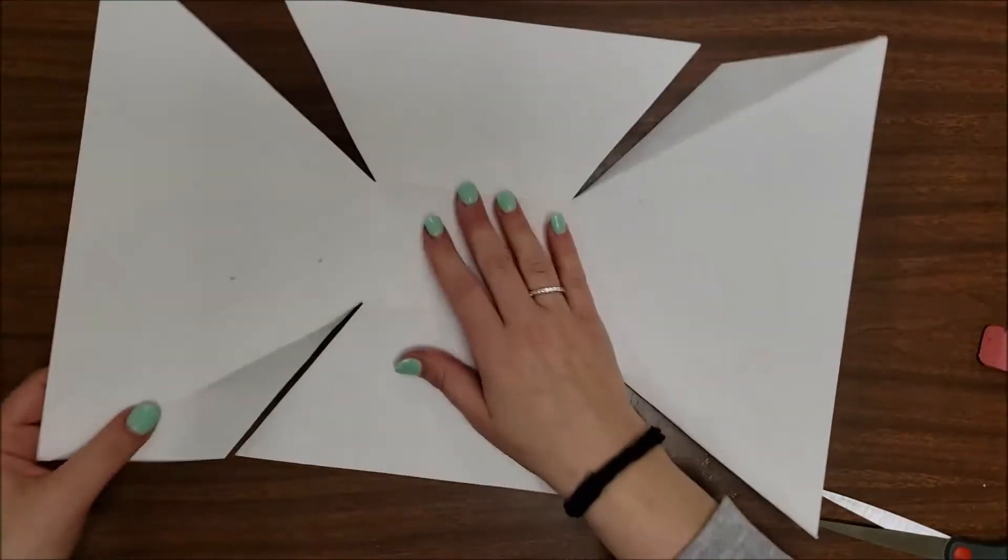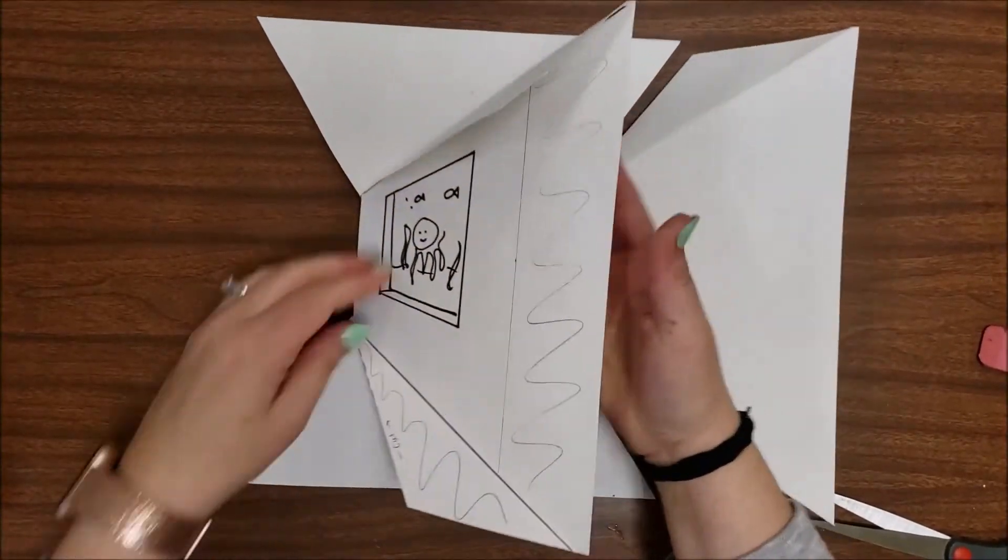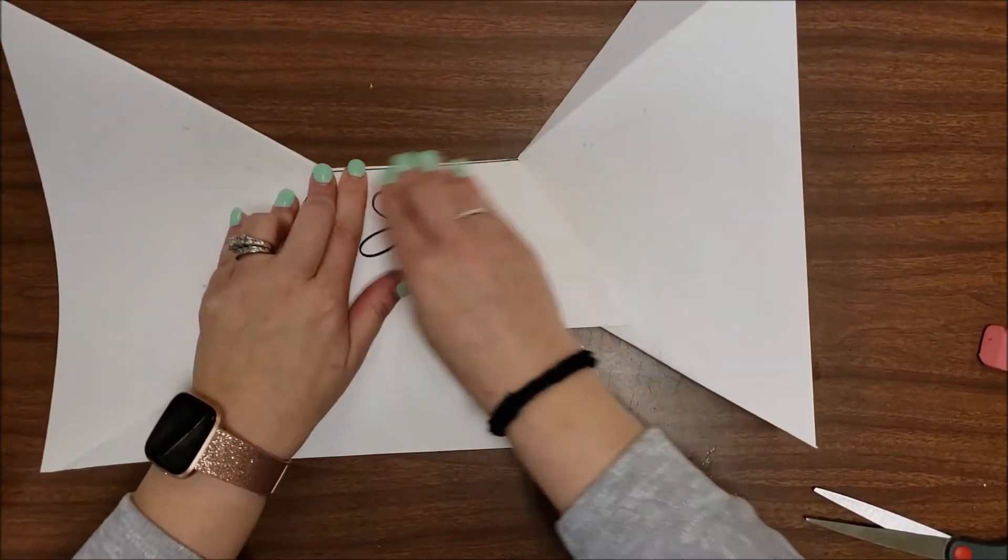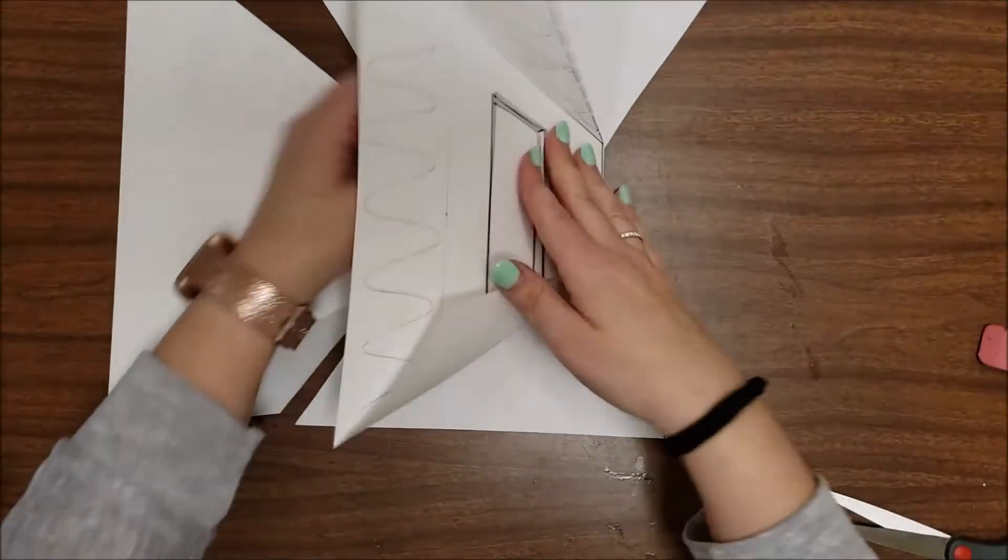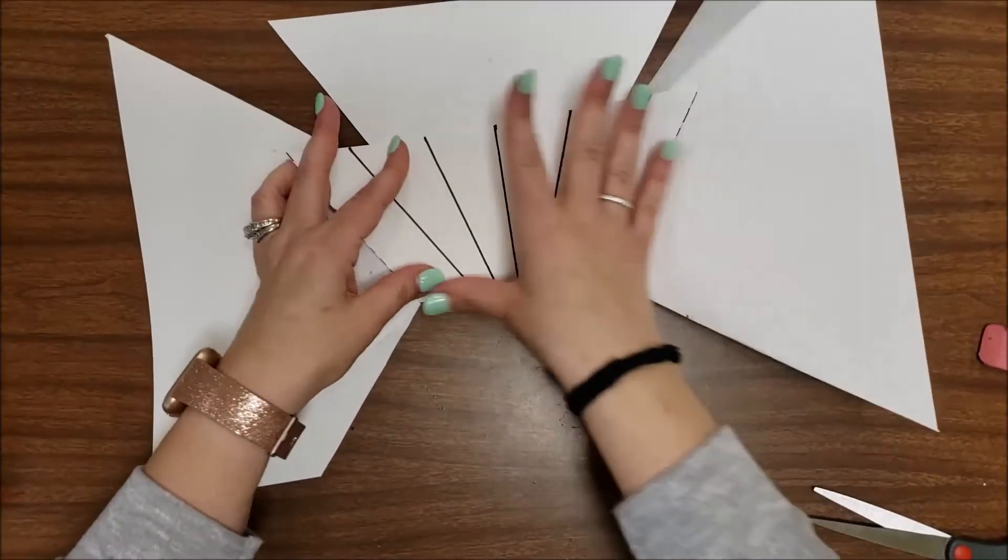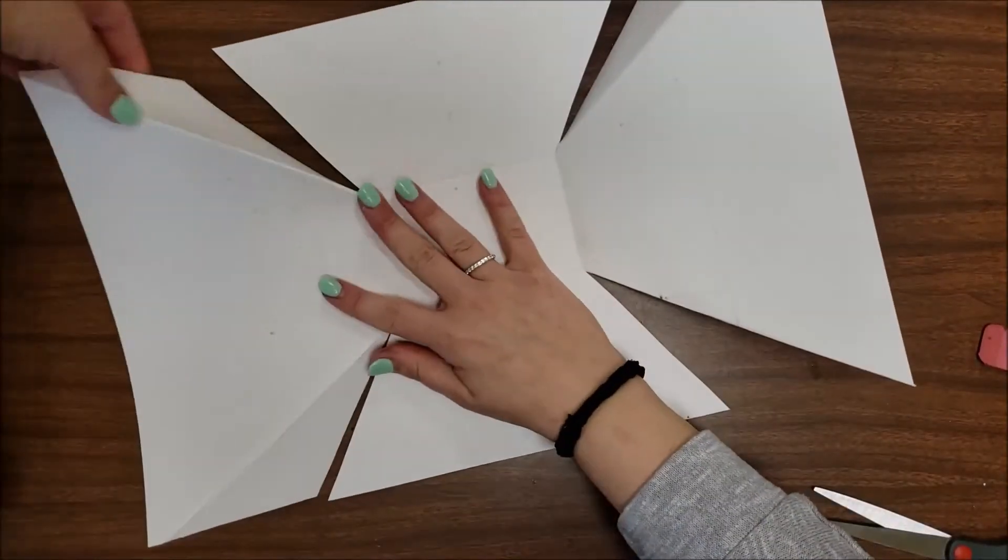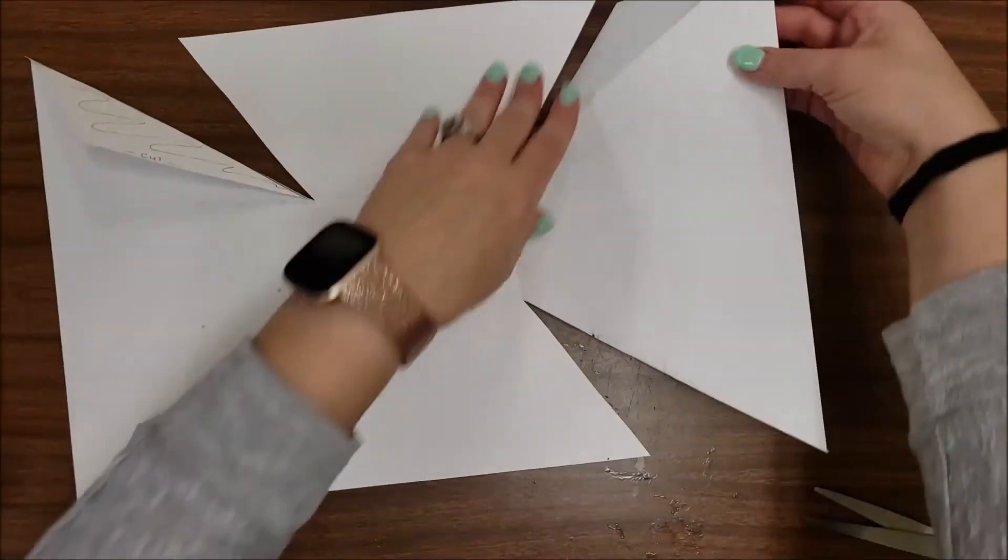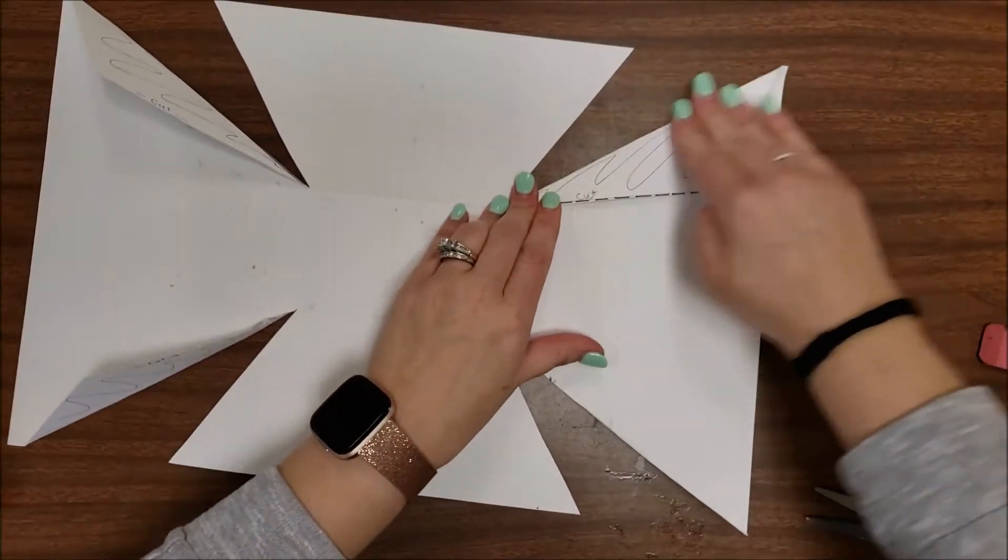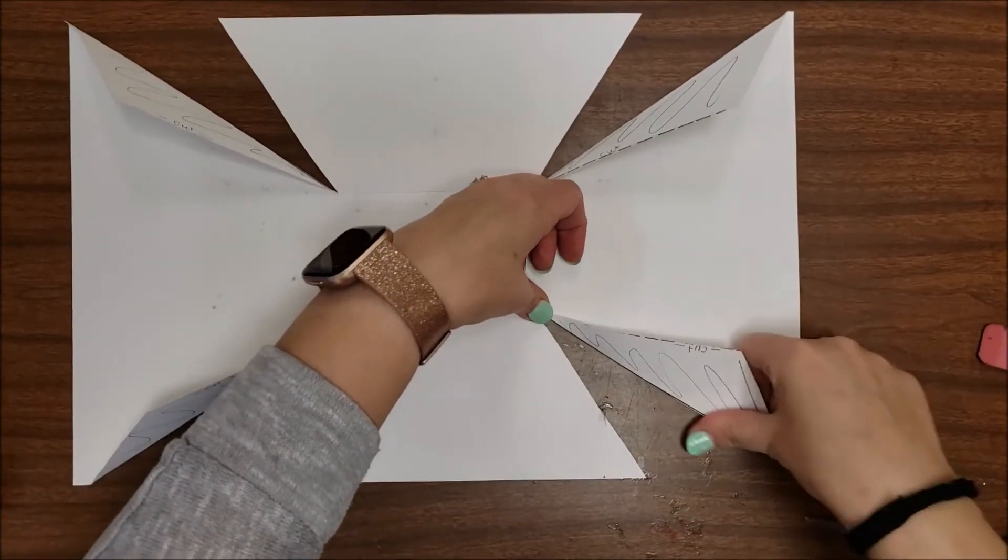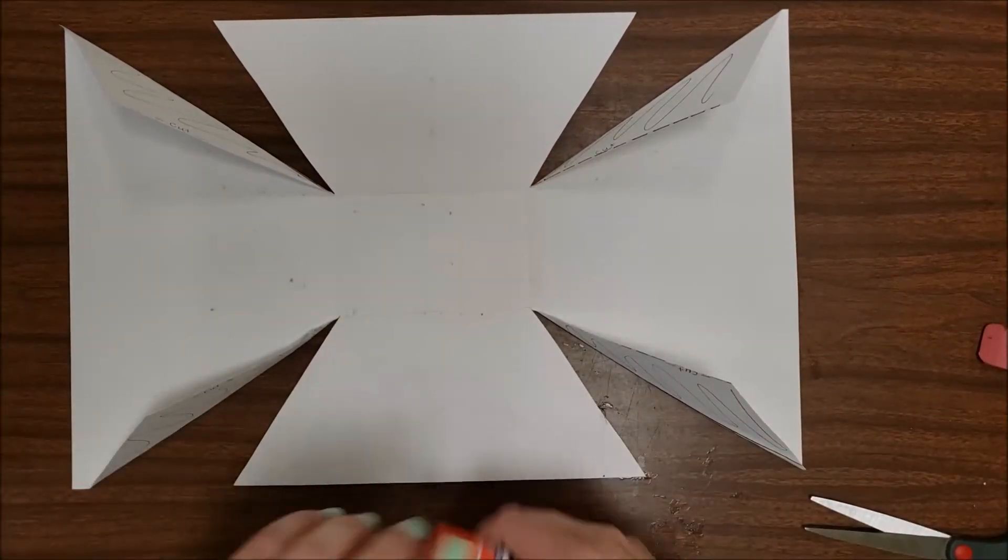Next, flip it over. Fold all the flaps the other way. This is the way they're going to be on their final version. And because we folded them once the first time, the second time is so much easier.